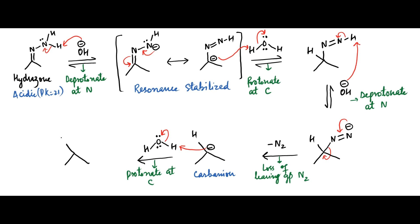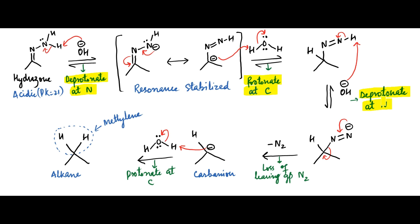Thus the carbonyl group is converted into a methylene group. The five reaction steps can be remembered as: deprotonation at nitrogen, protonation at carbon, deprotonation at nitrogen, loss of nitrogen gas, and protonation at carbon. The evolution of nitrogen gas renders this step irreversible and forces the reaction to completion.